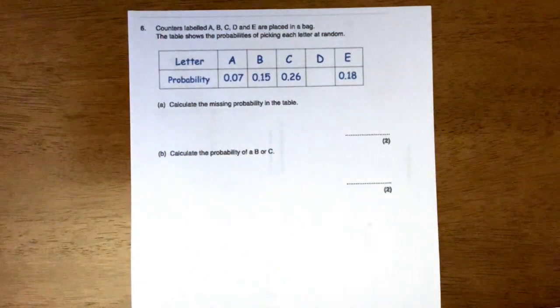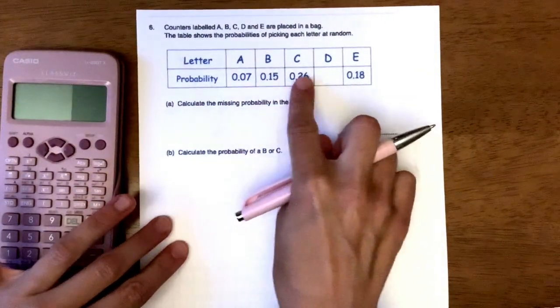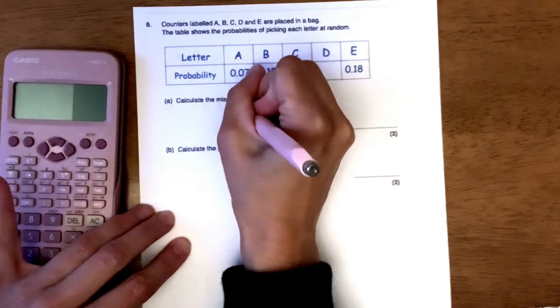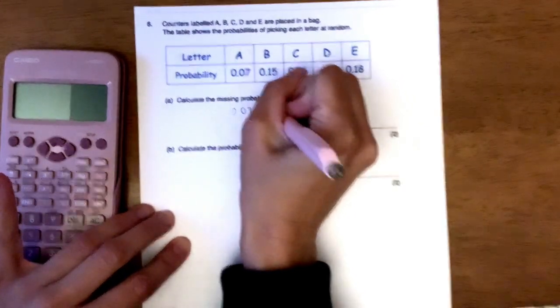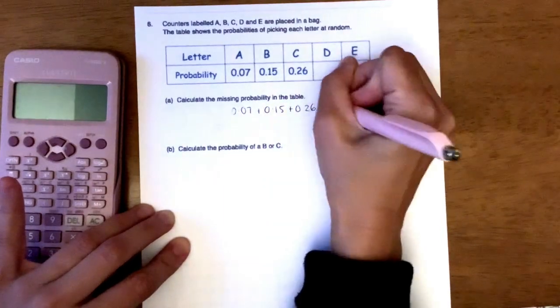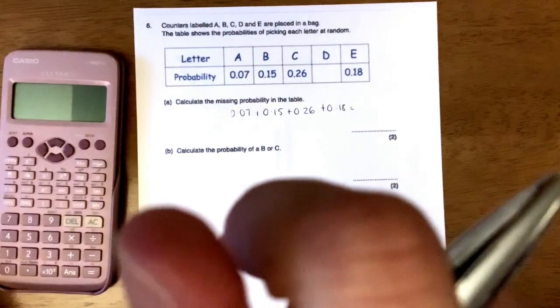So all we're going to do, and you can use a calculator to help you with this, I've got mine here, we're just going to add up the probabilities that we already know. So we're going to do 0.07 plus 0.15 plus 0.26 plus 0.18 and we add all those together.